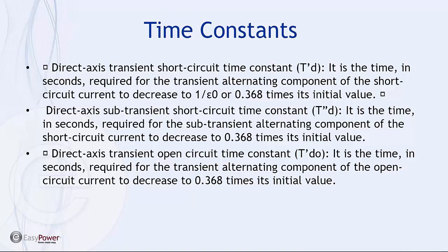We talked a little bit about the L over R time constants. And while it's a little more complicated than just an L over R calculation, the three primary terms that are utilized in analysis, or at least in plotting the TCC curves for the generator, involve the direct axis transient short circuit time constant T'd, which is the time in seconds required for the transient alternating component of the short circuit current to decrease to .368 times its initial value. And the direct axis sub-transient short circuit time constant T''d, again in seconds, it's the time required for the alternating component of the short circuit current to decrease to .368 times its initial value. And then the direct axis transient open circuit T'do, it's the time in seconds required for the alternating component of the open circuit to decrease to .368 times its initial value.